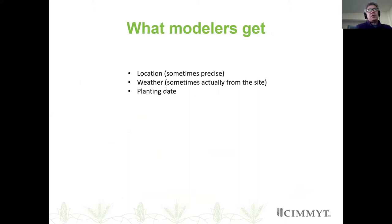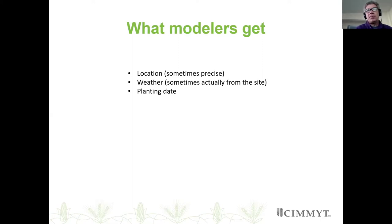What we normally get, based on my experience at CIMMYT and other CGIAR centers, is basically this: if you're lucky, you get a location — often not even precise — which is a big problem. We have hundreds of sites where CIMMYT germplasm is tested, and we realized that a lot of the locations are off by a couple hundred meters, sometimes by kilometers, which in countries with complex topographies like Ethiopia or Mexico can be quite misleading, especially when deriving weather data.